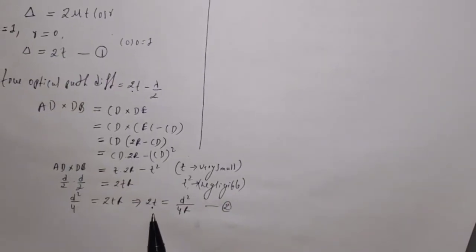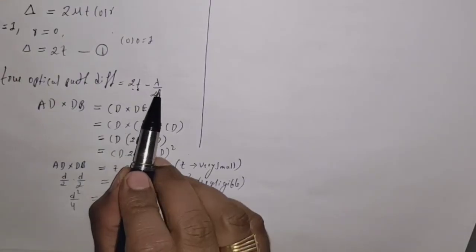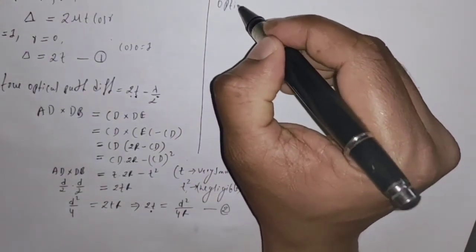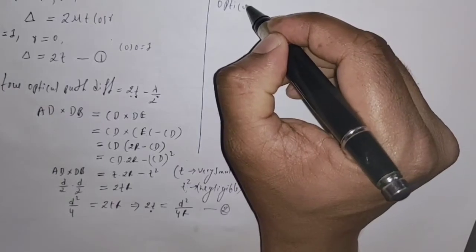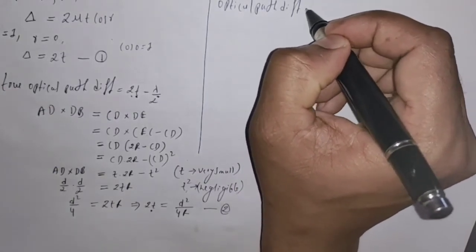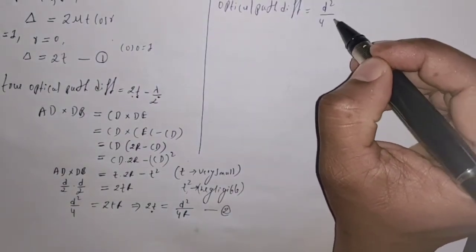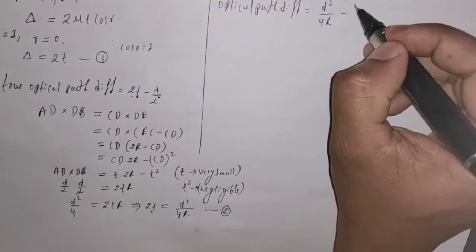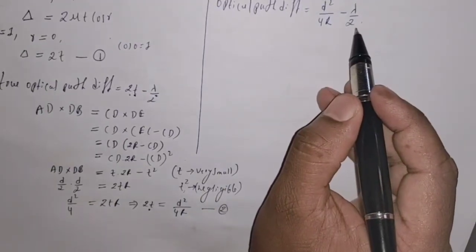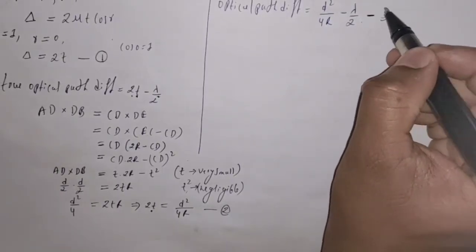Now let us substitute the value of 2T from equation 2 into the optical path difference equation. Then we get: path difference equals D squared divided by 4R minus lambda by 2. This is the optical path difference equation. Let us denote this equation 3.